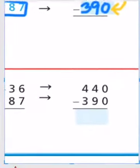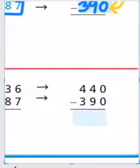So we have 440 minus 390. We're going to subtract the ones column first, 0 minus 0 is 0, and then we move to the tens column, 4 minus 9. Well, I can't do that. I can't have 4 of something and take 9 away.